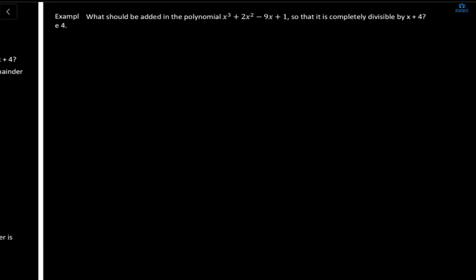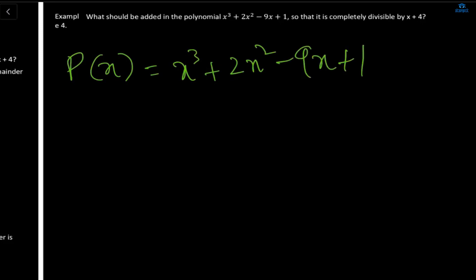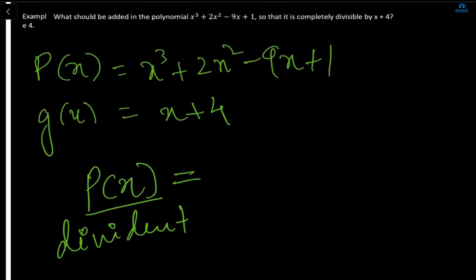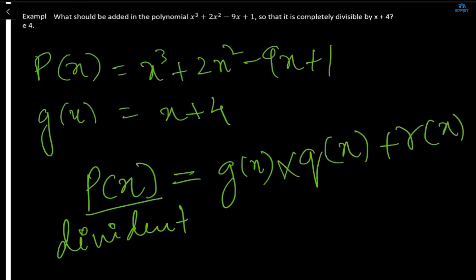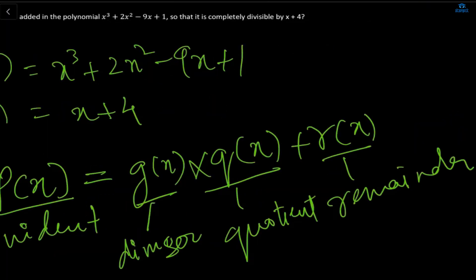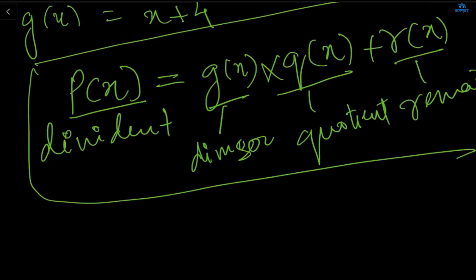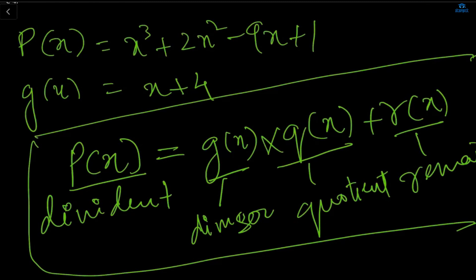The given polynomial is x³ + 2x² - 9x + 1. Now, gx is equal to x + 4. We know that p(x), the given polynomial, is the dividend. It is equal to gx multiplied by qx plus rx. Here gx is the divisor, qx is the quotient, and rx is the remainder. This is the division algorithm, also called the remainder theorem, that we are going to use. We are going to divide px by gx to find the remainder, then we can add that to px so it is fully divisible by x + 4.